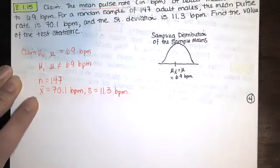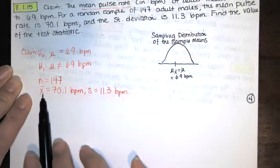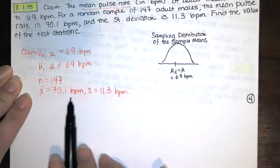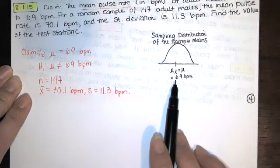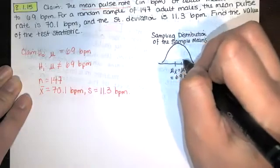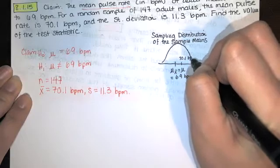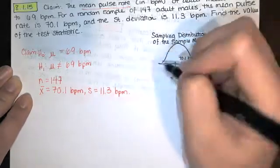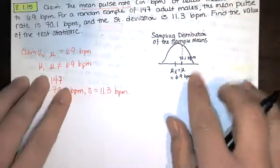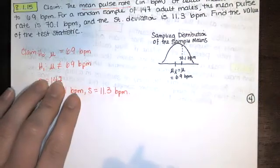And the question is, under that assumption, how rare is it for us to have a sample mean of 70.1 beats per minute, provided that the true mean is 69 beats per minute? Now, 70.1 is just a little bit more than our assumed mean. So the question is, what is the z-score, or not the z-score, what is the statistic that goes with that?